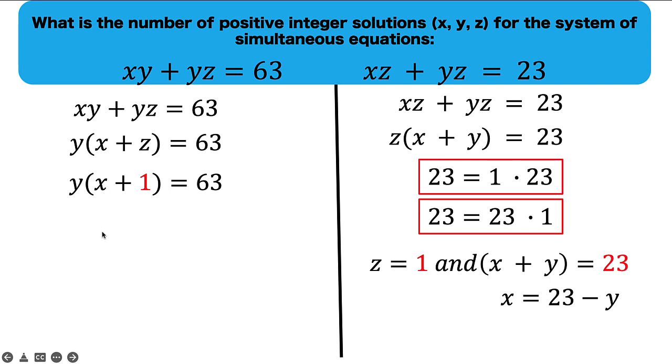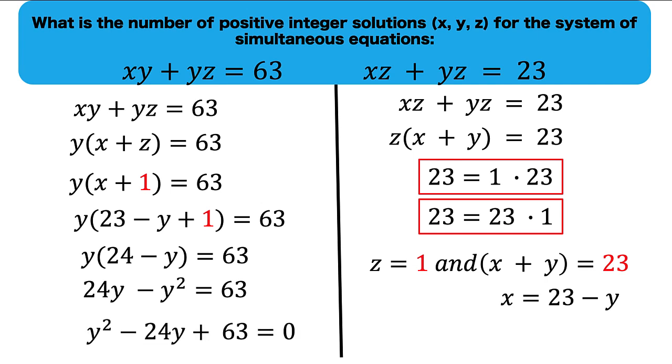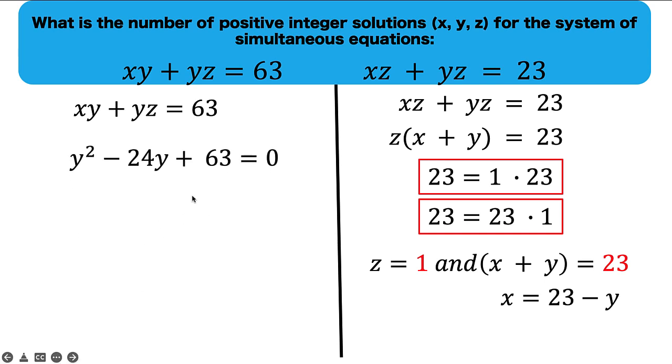Replacing now this x by 23 minus y, we have this form. And 23 plus 1 is 24. Then distribute y to this binomial. We have here a quadratic equation. Let's rewrite this in the standard quadratic form. And we know how to solve this quadratic equation.